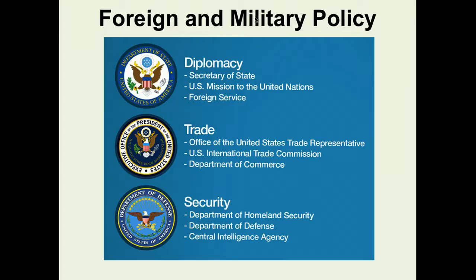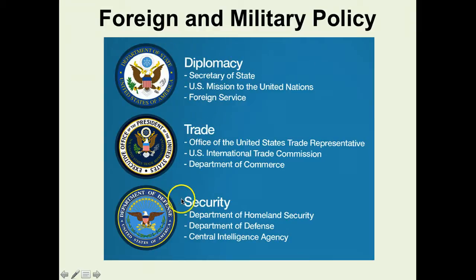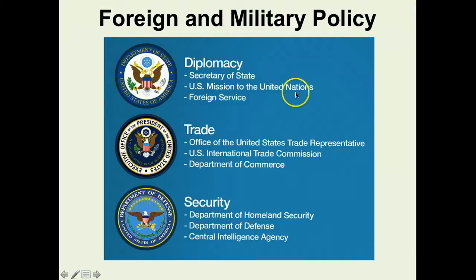I like this image because it does a nice job breaking down three big components of foreign policy the United States has: the diplomacy side, the trade side, and the security side. A lot of times students like to focus solely on the security — the military, the CIA, the spying — but diplomacy and trade are also quite important. We often try to resolve conflicts through diplomacy and negotiations, as well as using trade as both a carrot and a stick to motivate other countries to work with us.